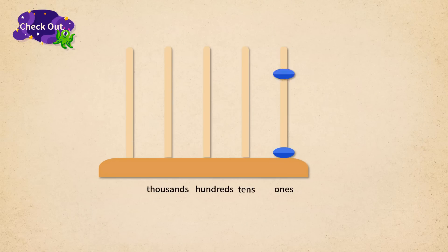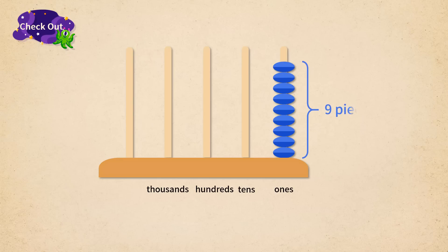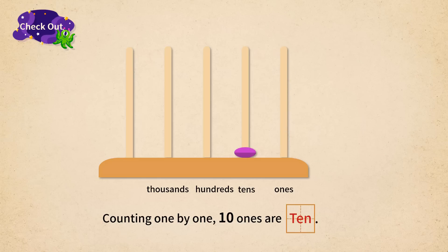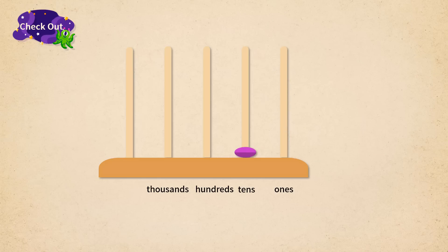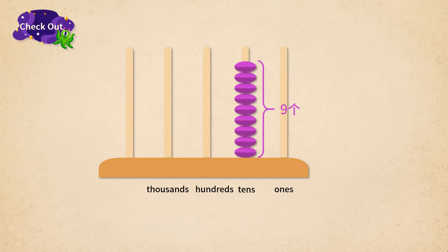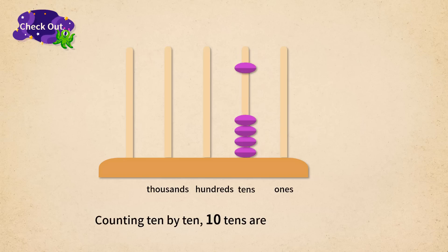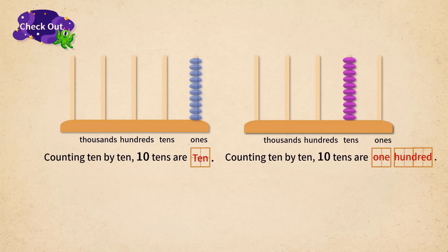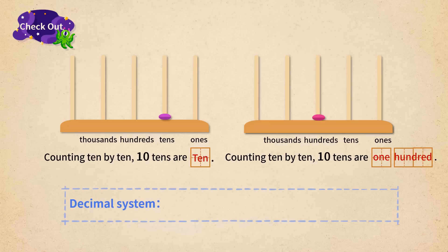How do I name the number after thousand? We can go back to what we have learned before. For numbers before one thousand, we count them one by one. Here is nine ones. After, we add another one — ten ones is one ten. Counting ten by ten, ten tens is one hundred. The rate of progression between each adjacent two counting units is ten, and this counting rule is called the decimal system.